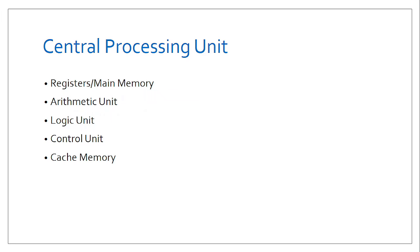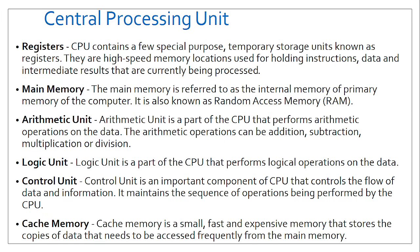The CPU also has the control unit, which manages the instructions from input devices all the way to output devices. Then there is the cache memory. Unlike the main memory, cache memory stores frequently accessed instructions, so rather than the CPU fetching instructions all the way from main memory, it can fetch them from cache memory much more quickly.